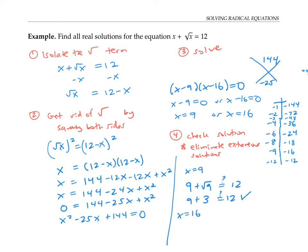Now let's try x equals 16. Plugging in: 16 plus the square root of 16 is supposed to equal 12. That says 16 plus 4 equals 12, which is definitely not true. So x equals 16 is an extraneous solution, and our only solution is x equals 9.